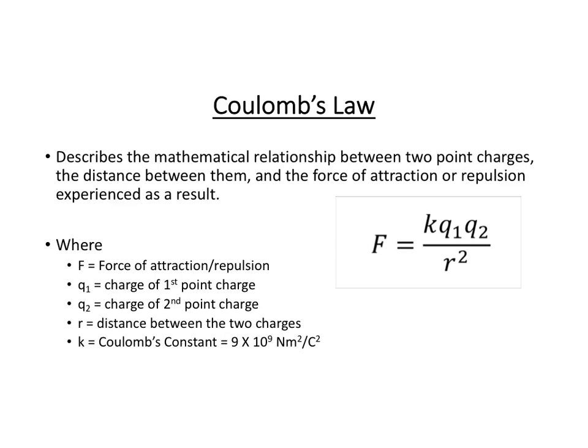Q1 and Q2, that's the charges of our point charges, both the first one and the second one. R is the distance between your two point charges. And then K is a constant, which means it's always the same, which in this case is Coulomb's constant, defined as 9 times 10 to the 9th Newton's meter squared per Coulomb squared.